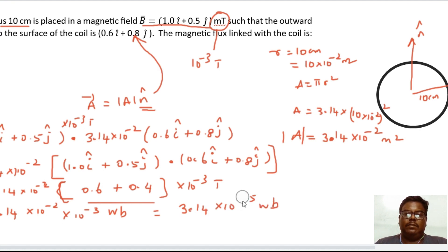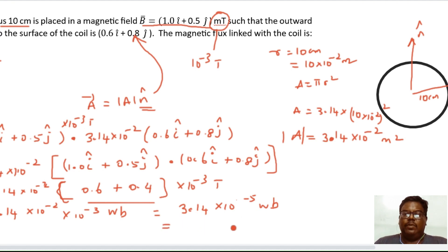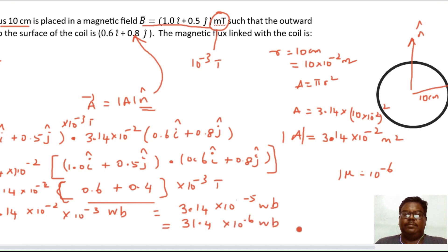Converting to microweber: since 1 micro = 10⁻⁶, we rewrite 3.14×10⁻⁵ as 31.4×10⁻⁶ weber, which is 31.4 microweber. Option C is correct.